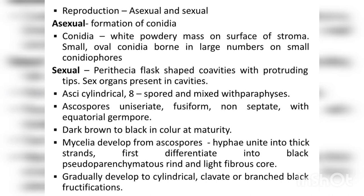Reproduction takes place by two types: asexual and sexual reproduction. Asexual reproduction takes place by the formation of conidia. Conidia appear as a white powdery mass on the surface of the stroma. On the black-colored fungus, we can see a white powder-like structure — that is the conidia. The conidia are small oval structures, and a large number of conidiophores can be seen.